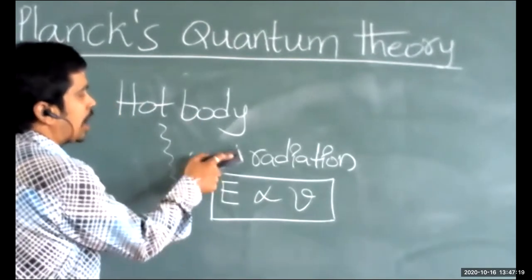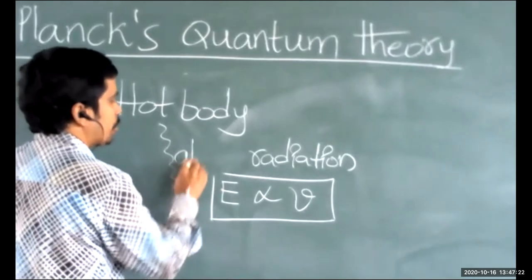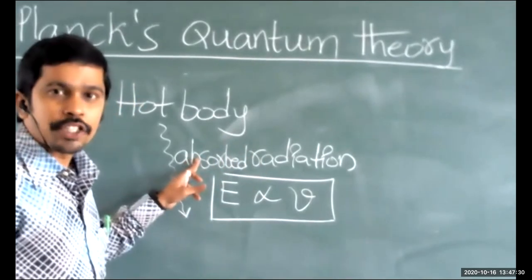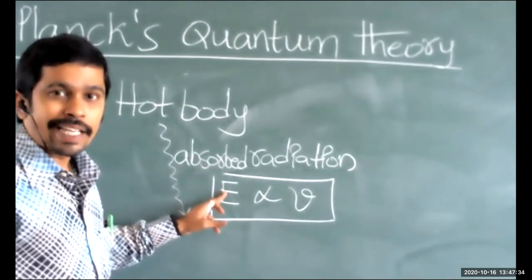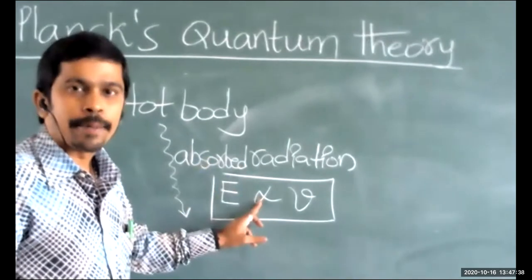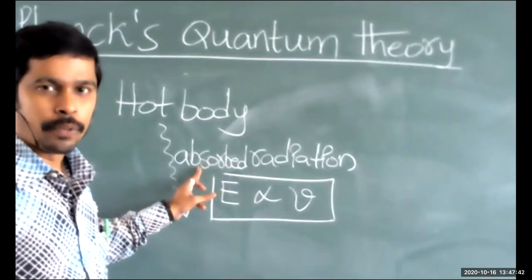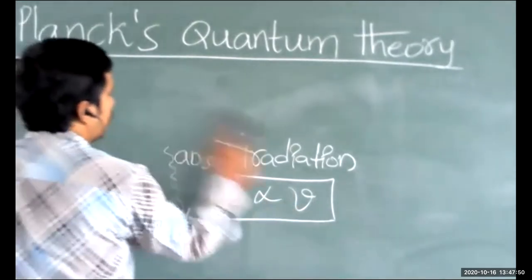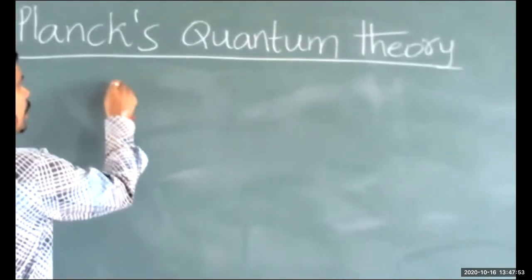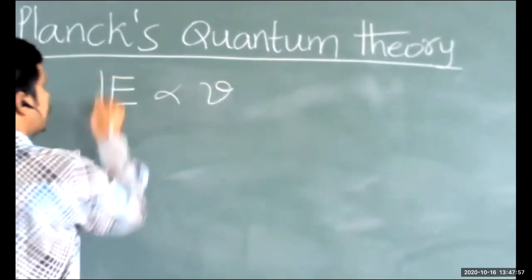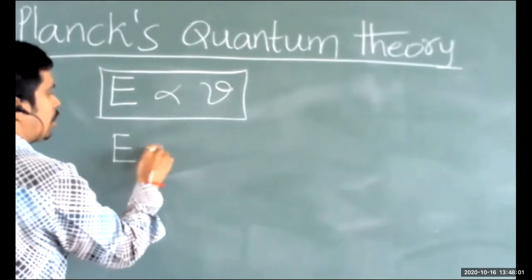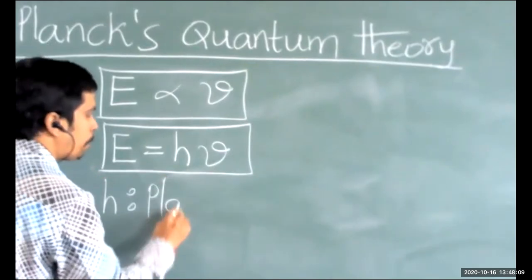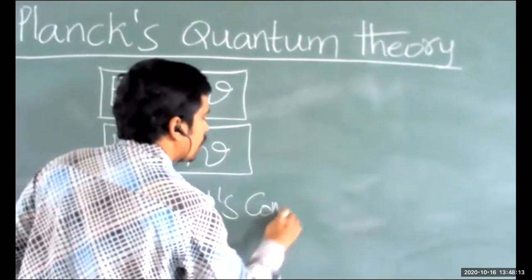Instead of emitted radiation, we can also say absorbed radiation, because hot bodies can also absorb energy. The energy of absorbed radiation of a hot body is directly proportional to the frequency of absorbed radiations. So the formula is: E is directly proportional to ν. To remove the proportionality symbol, a constant h is introduced — E = hν. Here h stands for Planck's constant.